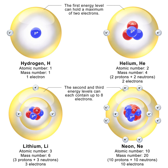Within the nucleus, protons and neutrons are bound together through the nuclear force. Neutrons are required for the stability of nuclei, with the exception of the single proton hydrogen atom. Neutrons are produced copiously in nuclear fission and fusion, and are a primary contributor to the nucleosynthesis of chemical elements within stars through fission, fusion, and neutron capture processes.